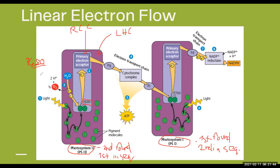P680 is named so because the wavelength of light it most efficiently absorbs is 680 nanometers. P680 is the name of the special pair in Photosystem 2. Once P680 receives energy from the antenna pigments in the light harvesting complexes, it becomes excited to the point where it can donate its electron to the primary electron acceptor.